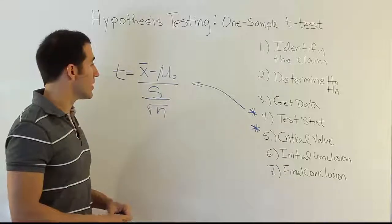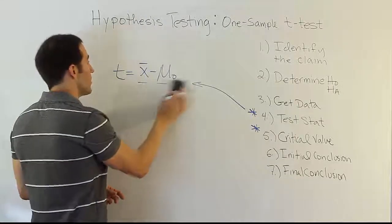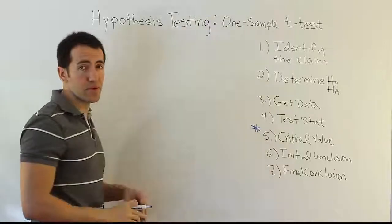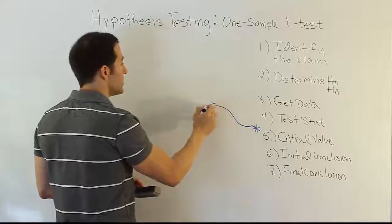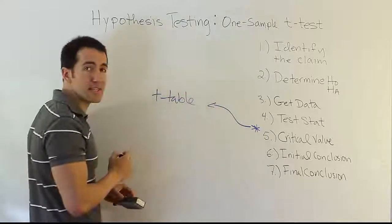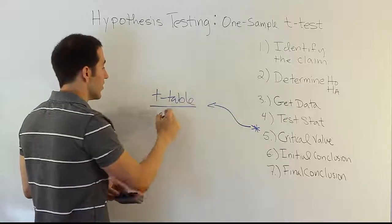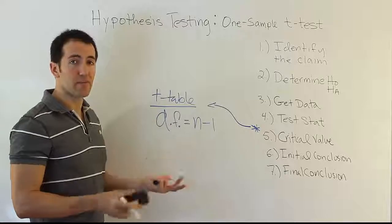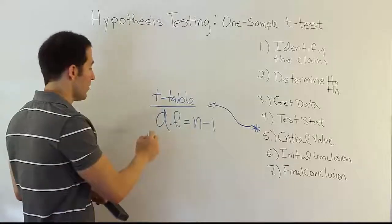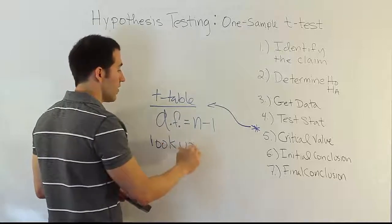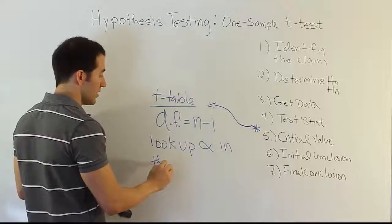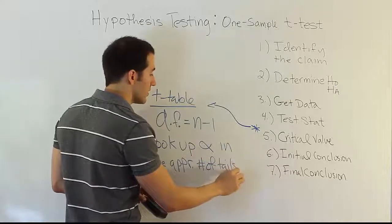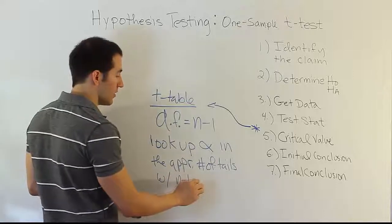And then from there we do step five, and that's where I guess a fairly significant change occurs. What you deal with in step five that changes is that when you're going to get the critical value from your table, you first of all will not use a z-table anymore. You'll have to use a t-table to do this. So we go to the t-table. And of course, inherent in a t-table is the concept of degrees of freedom. So you'll need to look up your item by the degrees of freedom. So remember degrees of freedom is n minus one, so you'll look up your alpha in the appropriate number of tails under the appropriate degrees of freedom. So you will look up alpha in the appropriate number of tails with n minus one degrees of freedom.